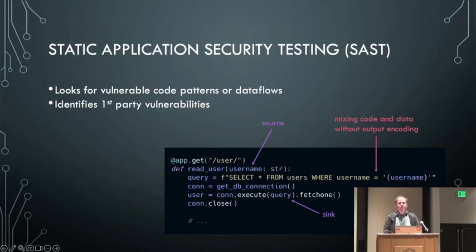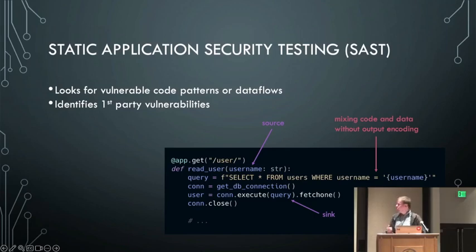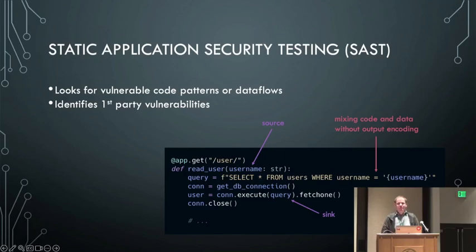The third aspect is static application security testing — SAST for short, sometimes also called static code analysis. We want to look for vulnerable patterns in our source code: simple structural things or data flows. Data flows are very good for capturing injection issues where code and data are mixed. Here's a minimal snippet implementing an API endpoint: there's a source of tainted data — the username variable — that gets filled with attacker-controlled data, and then we concatenate that directly with a SQL command that gets executed asynchronously without proper output encoding. That makes this snippet vulnerable to SQL injection. These are the three things we've implemented today.